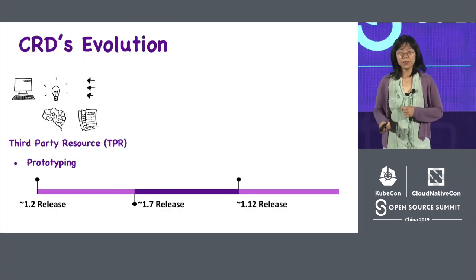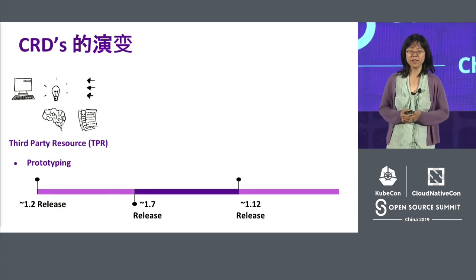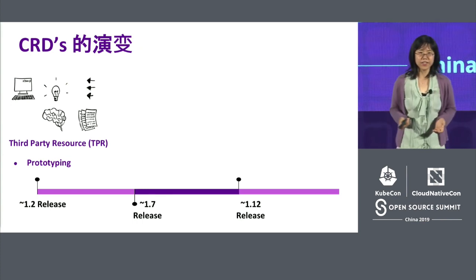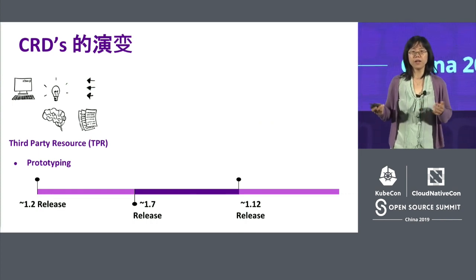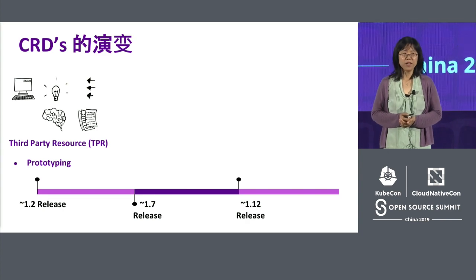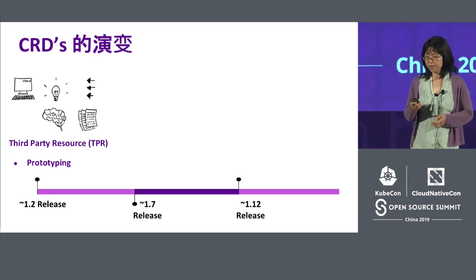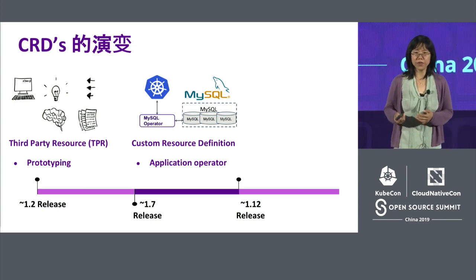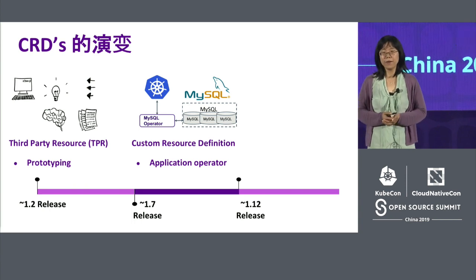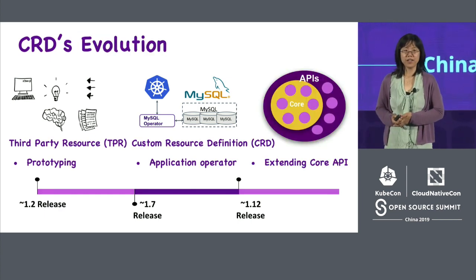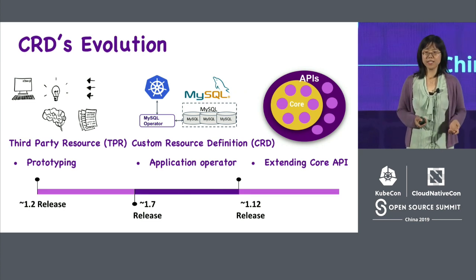We did it in two minutes — it is easy! Before finishing our talk, we want to review CRD's history. At the very beginning, CRD had a different name: Third-Party Resource, or TPR. People wanted to try out their ideas, and TPR for the first time gave you a way to do it outside of Kubernetes without adding your API into Kubernetes core. Over time it improved a lot and added many more features, and people started to realize the benefits — they began creating application operators to manage their own logic. Today, not only for prototyping and application operators, we've shown how to use CRD to extend the Kubernetes API core.